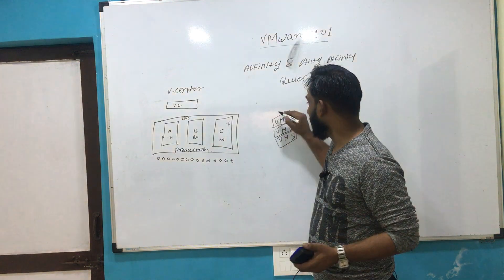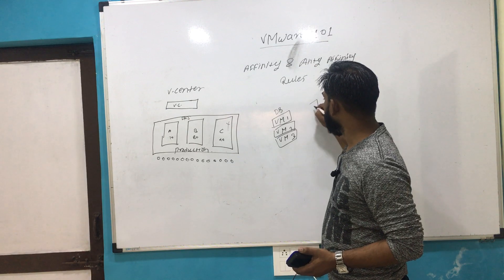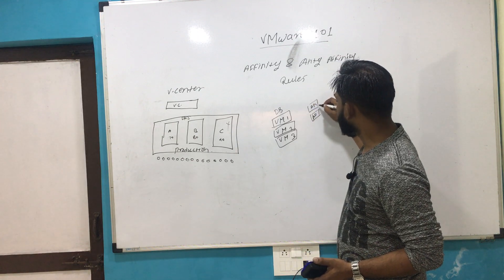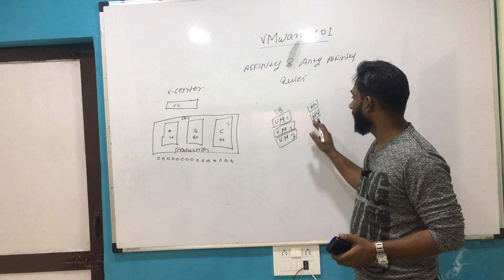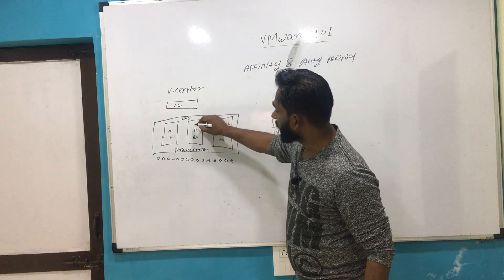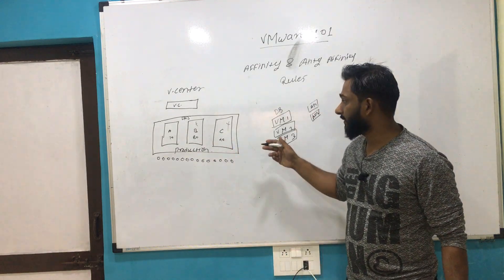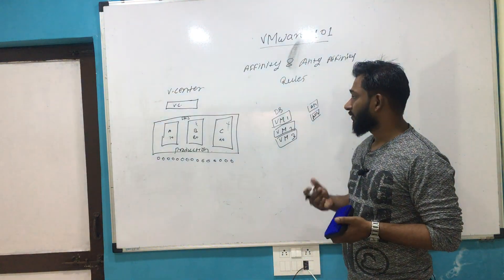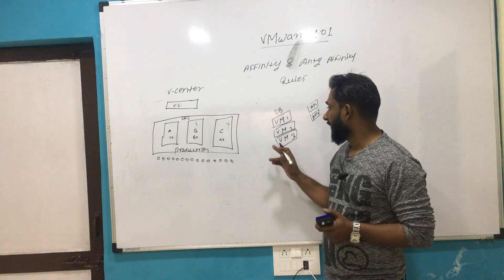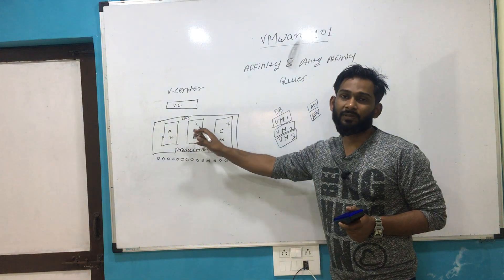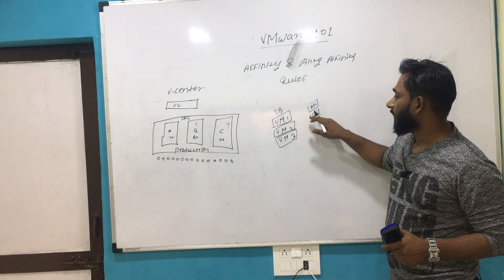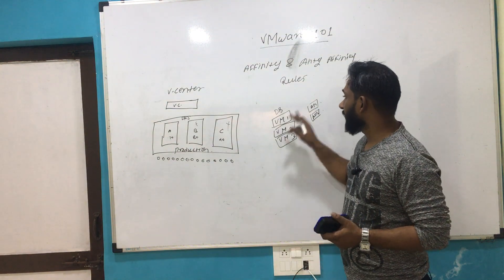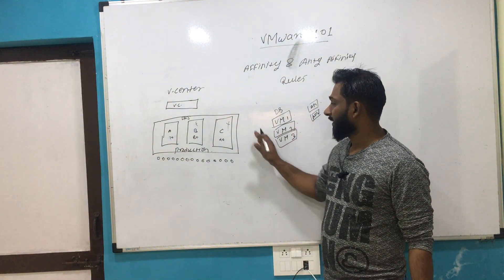Whether it's a database or application VMs — App1 and App2 — these should not be on the same host. If Host B goes down, the VMs will restart with the help of HA, but there will be a slight downtime until the VMs come back and the application starts working. The solution is to create an anti-affinity rule so these VMs are never placed on the same host.